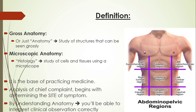Anatomy is the base of practicing medicine. Once you meet your patient, you start by analyzing the chief complaint, and the first thing we ask for is the site of the symptom. Diagnosis differs depending on the site and location of the pain. For example, epigastric pain can be a stomach or esophagus problem; chest pain can be acute coronary syndrome, pericarditis, or aortic dissection; left hypochondriac pain can be the spleen or ribs; right inguinal pain can be herniation or appendicitis.